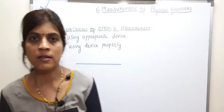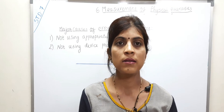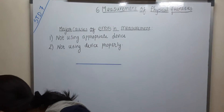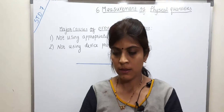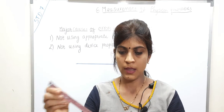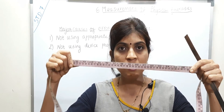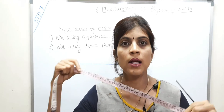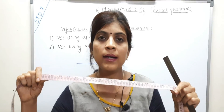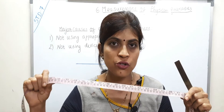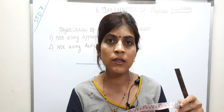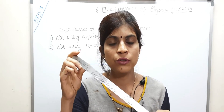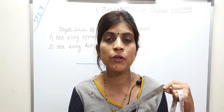The first reason is not using an appropriate device. A device means the thing used for measurement. For example, this is a measuring tape — the device used by a tailor to measure the length of body parts. But instead of this measuring tape, if the tailor uses another device like a ruler or foot rule for measuring the length of body parts, will he or she be able to measure the length exactly?